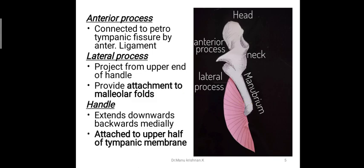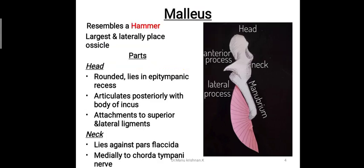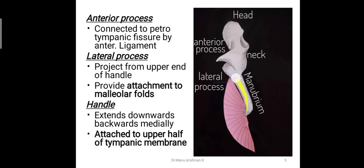The anterior process of the malleus is connected to the petrotympanic fissure by the anterior ligament. It is a pointed process arising behind the neck region. The lateral process projects from the upper end of the handle of the malleus and provides attachment to the malleolar folds. There are two malleolar folds in the tympanic membrane — the anterior and posterior malleolar folds — and they correspondingly attach to the lateral process.